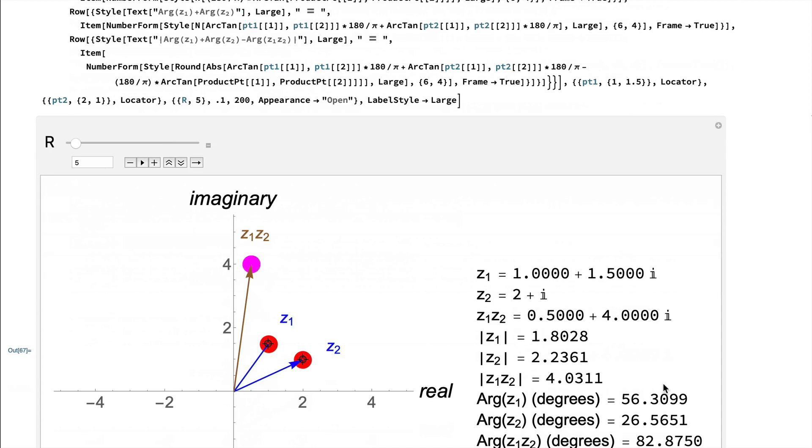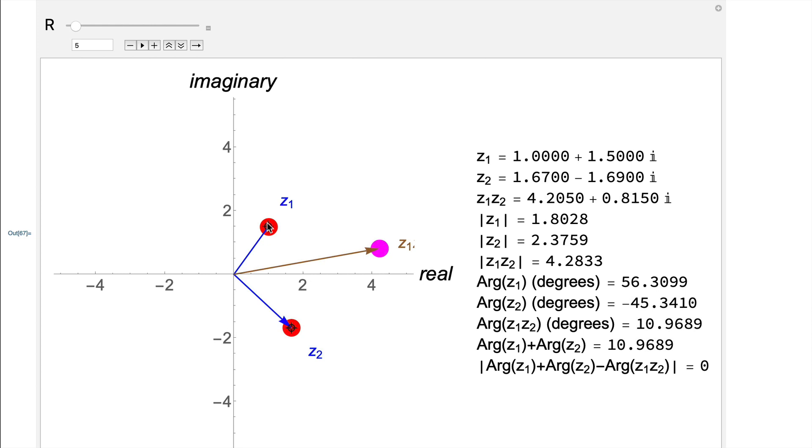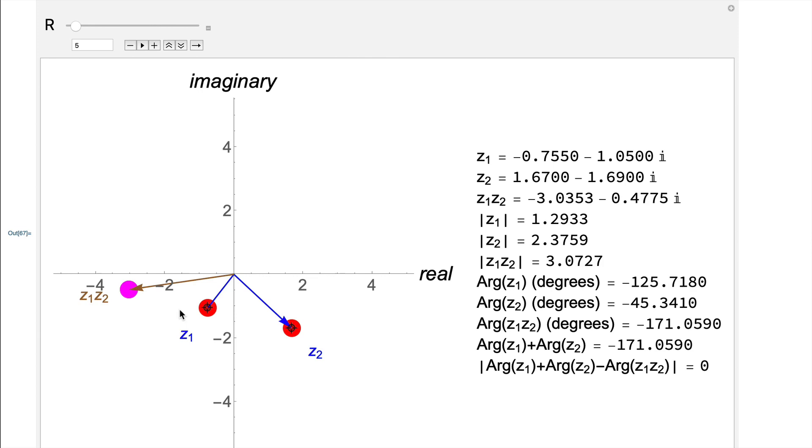You get output that looks like this, which you can interact with. We can move z1 and z2 around, change their angle, change their distances to the origin, and we can see how the product in pink changes as we move the red dots around.